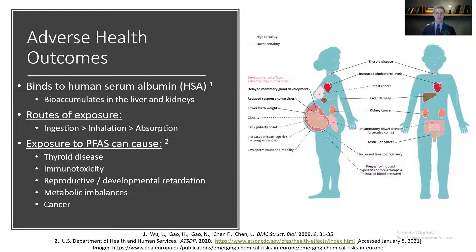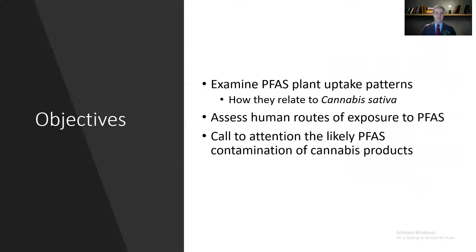The main route of exposure to PFAS is ingestion, but inhalation and absorption are also possible. And because this contamination is so pervasive, because they don't break down in the environment, and because they're known to cause adverse health outcomes, the main goal of this research was to examine PFAS uptake in plants and how that applies to cannabis, and also to call attention to the likely PFAS contamination of various cannabis products.